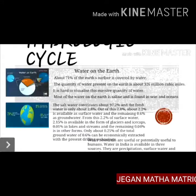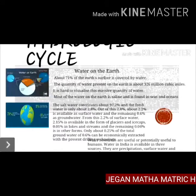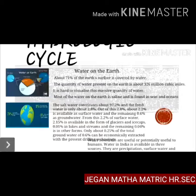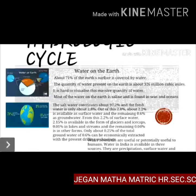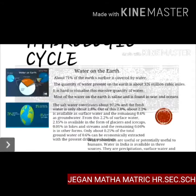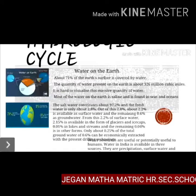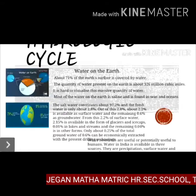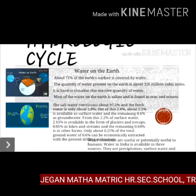About 71 percent of the earth's surface is covered by water. The quantity of water present on the earth is about 326 million cubic miles. Most of the water on the earth is saline and is found in seas and oceans. Salt water constitutes about 97.2 percent and fresh water is only about 2.8 percent.